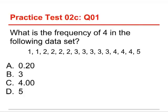What is the frequency of 4 in the following data set? And the answers are 0.20, 3, 4.00, or 5. The answer to this one is 3, because the value or score of 4 occurs 3 times.